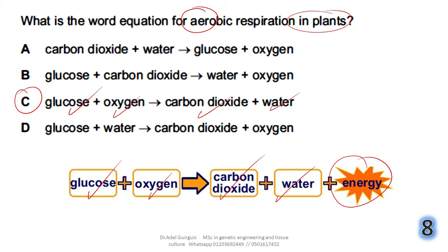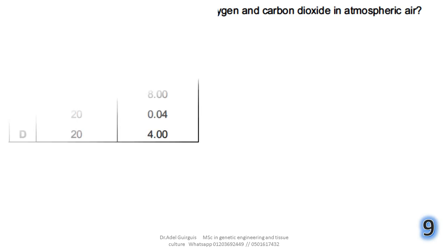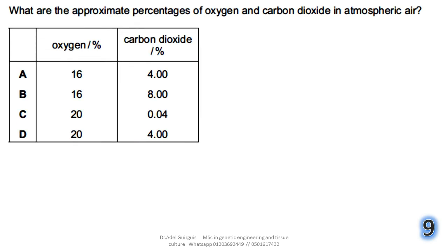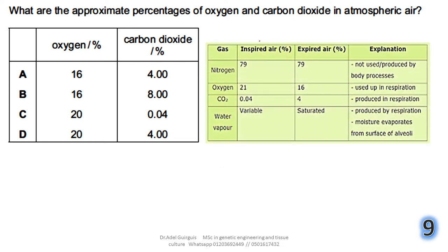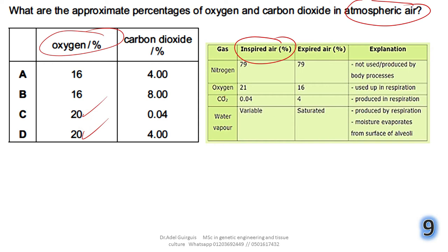Plants respire 24/7, just like humans, without stopping. Question 9: what are the approximate percentages of oxygen and carbon dioxide in atmospheric air? Oxygen in atmospheric air is approximately 20–21%. Carbon dioxide is approximately 0.04%. The answer is C.